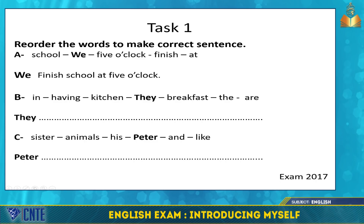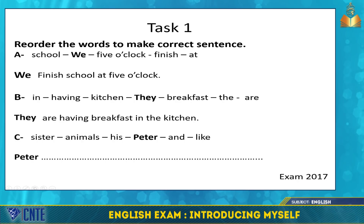Second sentence words: in, having, kitchen, they, breakfast, the, bar — starting with 'they'. The answer is: They are having breakfast in the kitchen. Third sentence words: sister, animals, his, Peter, and, like — starting with 'Peter'. The answer is: Peter and his sister like animals.